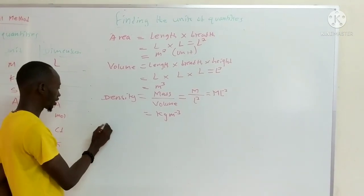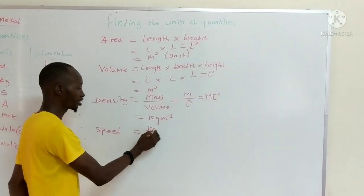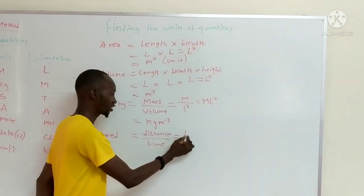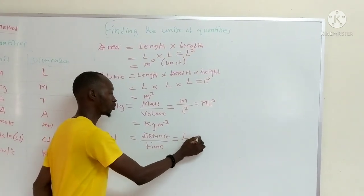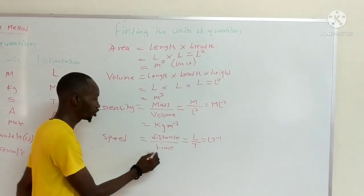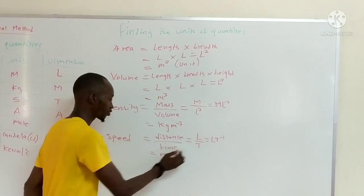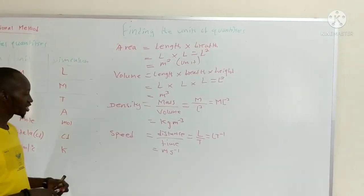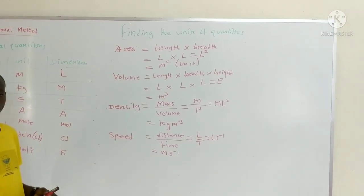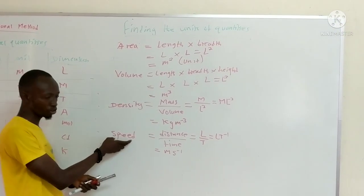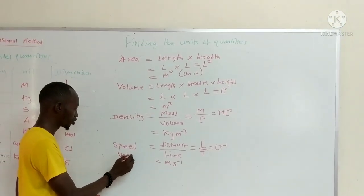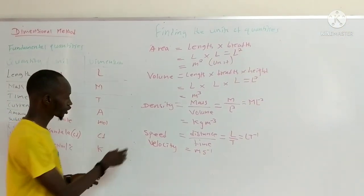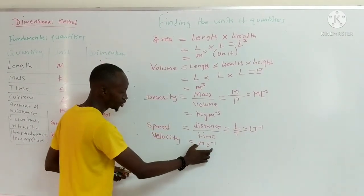Let's take speed. Speed is measured as distance divided by time taken. So the dimension of distance is L, and the dimension of time is T. If we put it up, it is going to be LT⁻¹. The unit of length is metres and the unit of time is seconds, so the unit of speed is metres per second (m·s⁻¹). There are certain quantities which have the same unit and dimension. Speed has the same unit as velocity: LT⁻¹, with units metres per second.